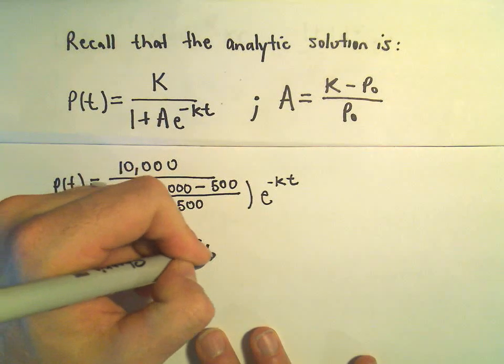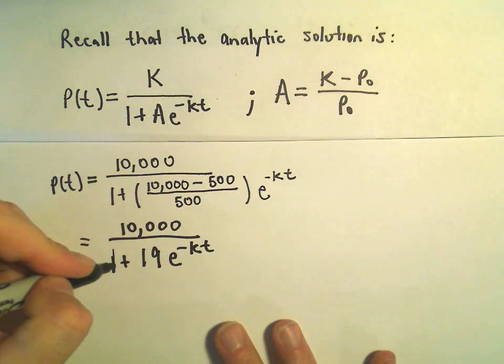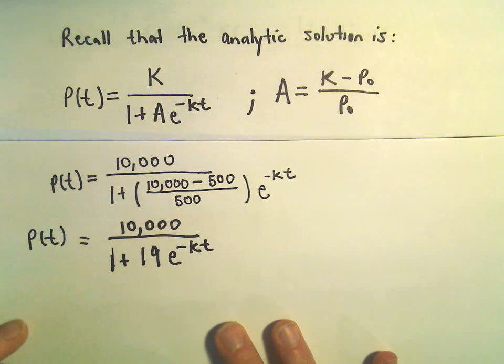e to the negative k times t. So I claim if you simplify this stuff in the parentheses, you just get 19. And that's going to be our population at some time t.